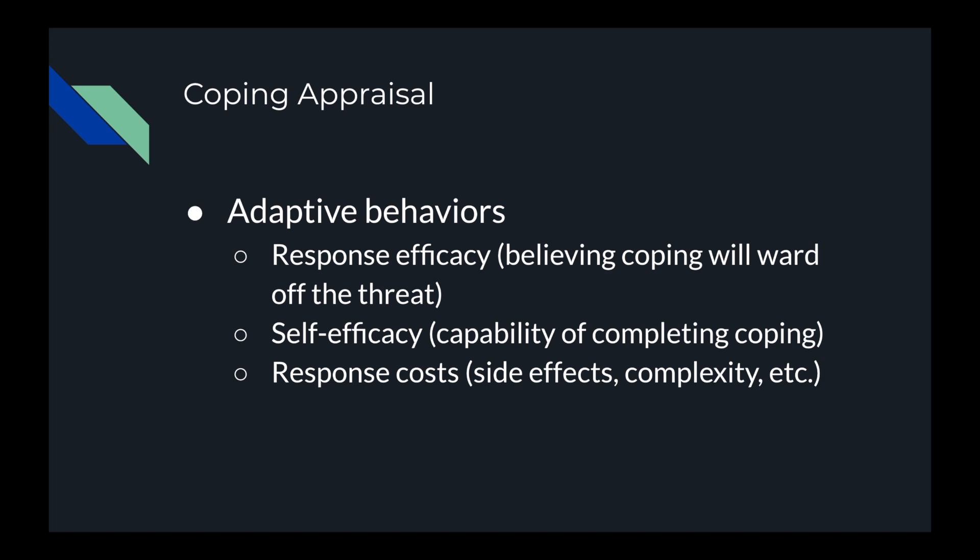Next, we'll be talking about the coping appraisal, which is the second appraisal. This assesses adaptive behaviors, which are also health enhancement behaviors. This includes response efficacy — believing coping will ward off the threat, so basically make the threat go away. It also includes self-efficacy, the capability of completing the coping, and lastly is the response cost, which can include side effects, complexity, etc.